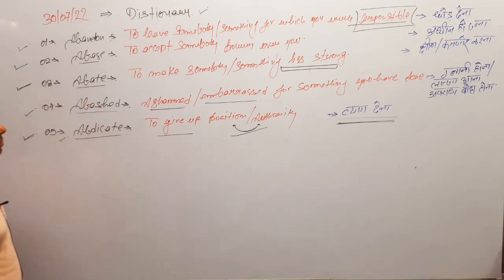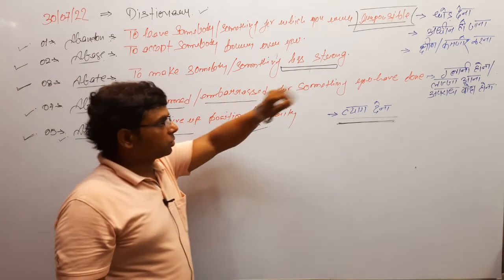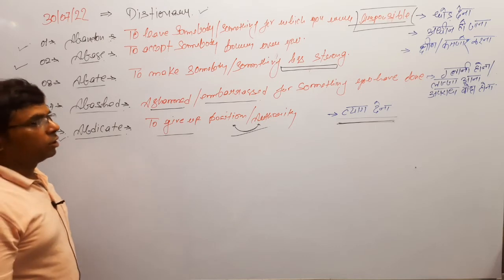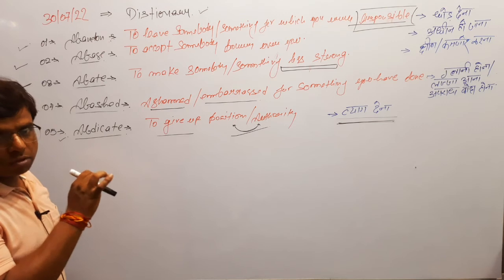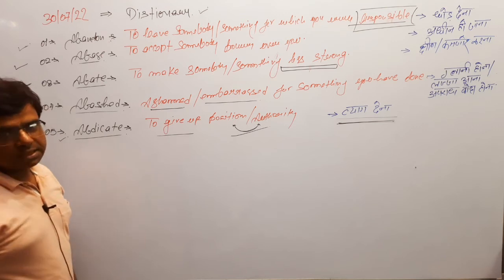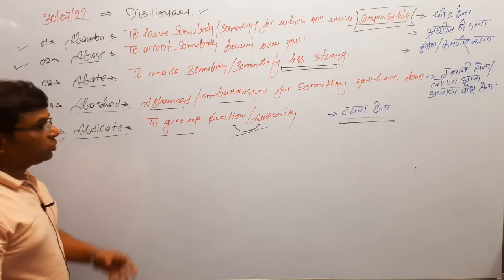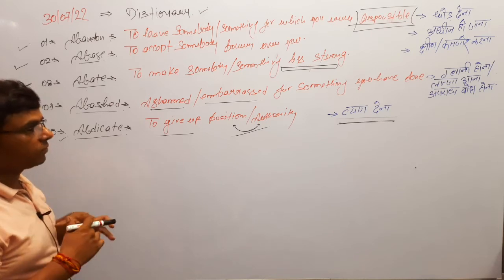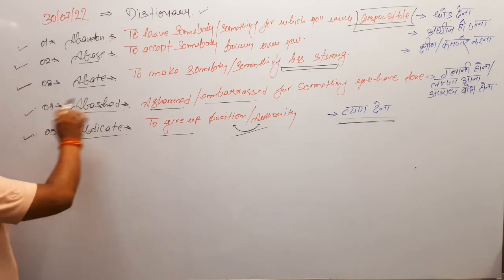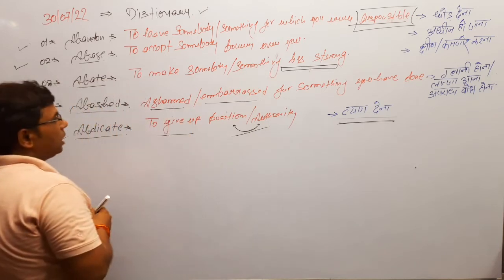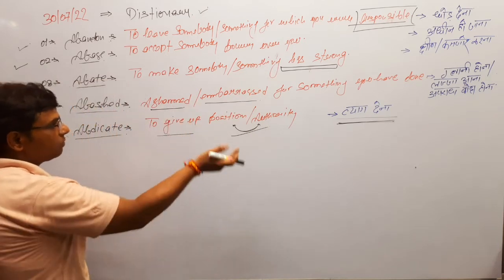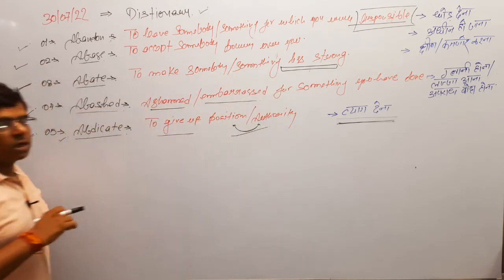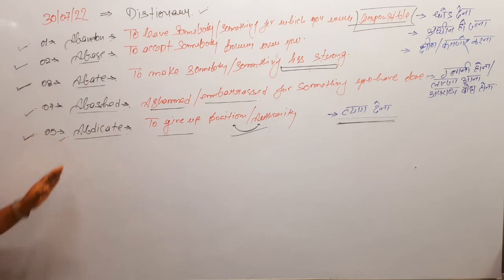The third word is 'abate': to make somebody or something less strong. Suppose you know you must have a good command over your language for mains answer writing and the interview section, but you are not doing the required amount of work on yourself — this is also a kind of abate. To make somebody or something less strong — in this case, to make myself less strong by not working on my language command.